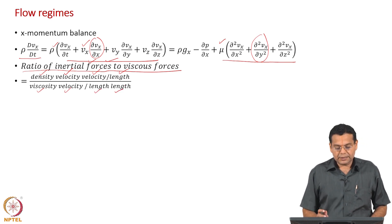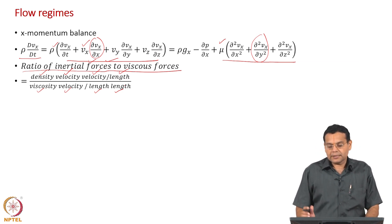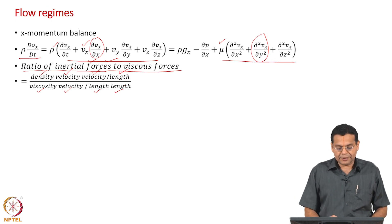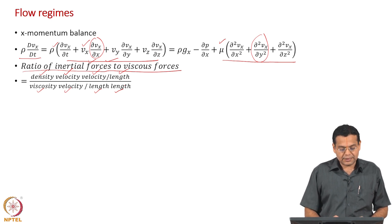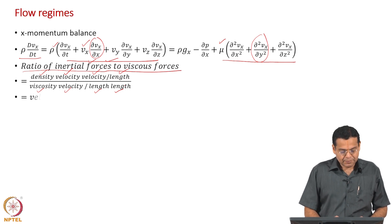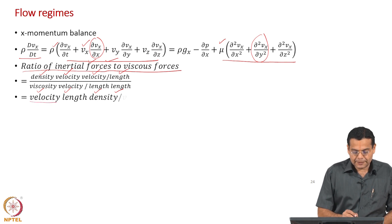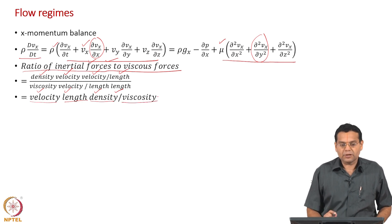Taking the ratio of inertial forces to viscous forces, velocity cancels and one length term cancels, leaving us with velocity, length, and density in the numerator and viscosity in the denominator.